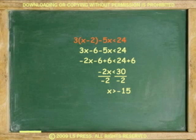Let's multiply and divide inequalities now. For example, 3 times x minus 2 minus 5x is less than 24. Distribute parentheses. Combine like terms. Divide by negative 2. Change direction of inequality.